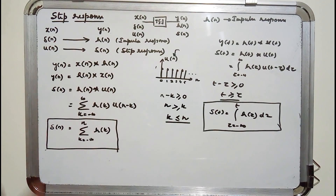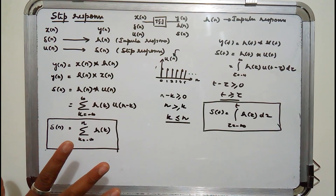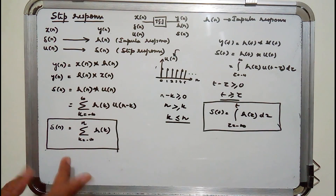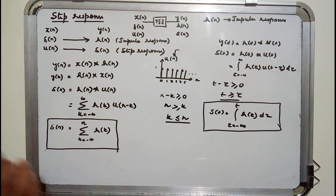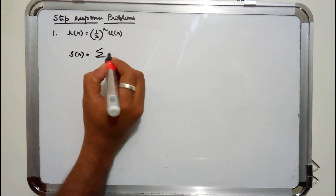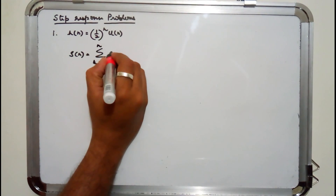When impulse response is given, this is how you find the step response of a discrete time system or a continuous time system. We will be solving some problems — you will be given impulse response and asked to find the step response, or asked to find whether the system is causal, memoryless, and stable. The step response formula is s of n equals summation k from minus infinity to n of h of k.